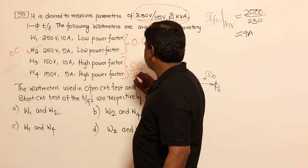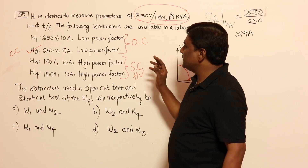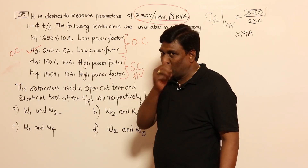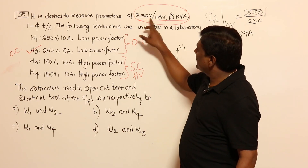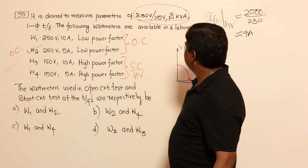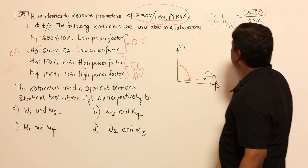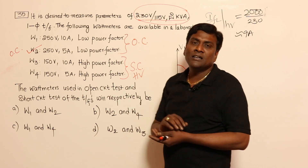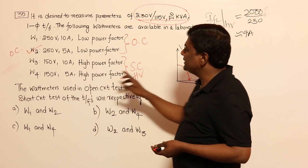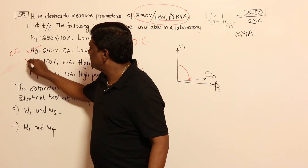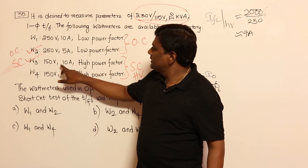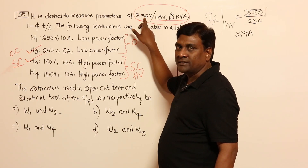SC test is also under HV side only. Don't think 115 is nearer to 150 — the relevant voltage here is the short circuit voltage, which is very small compared to rated voltage. 230 volts rated means the SC voltage is about 23 volts, which is nearer to the 150V range. Full load current on HV side is 9 amperes; SC test is conducted at rated current. So 9 amperes is nearer to 10 amperes — we select W3, with 10A and 150V ratings, for the SC test.